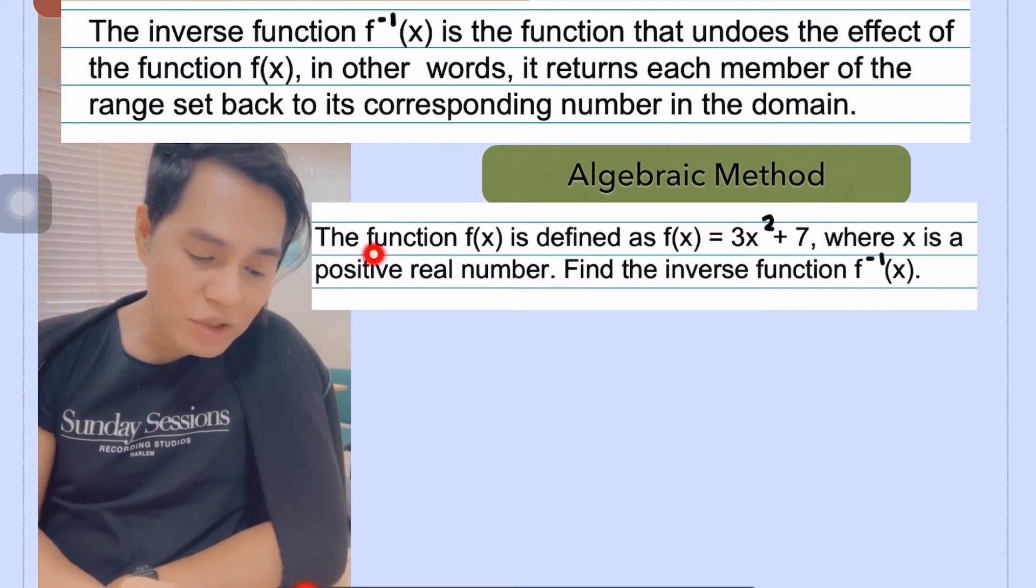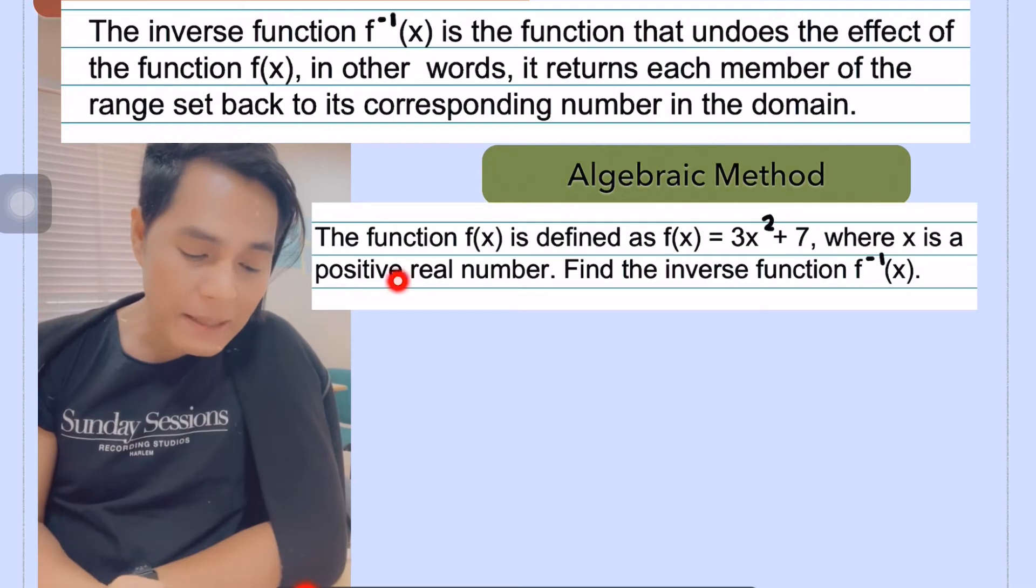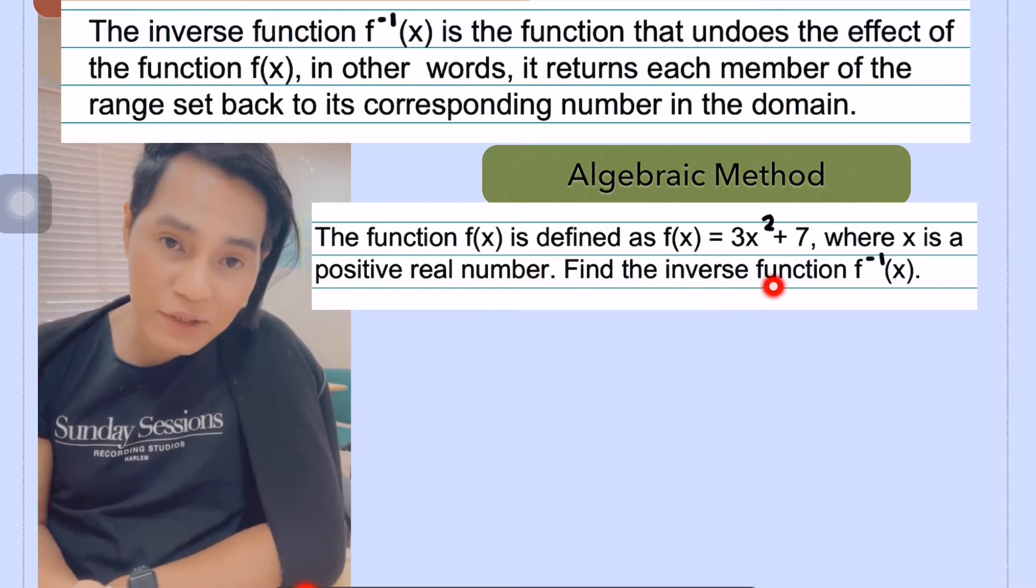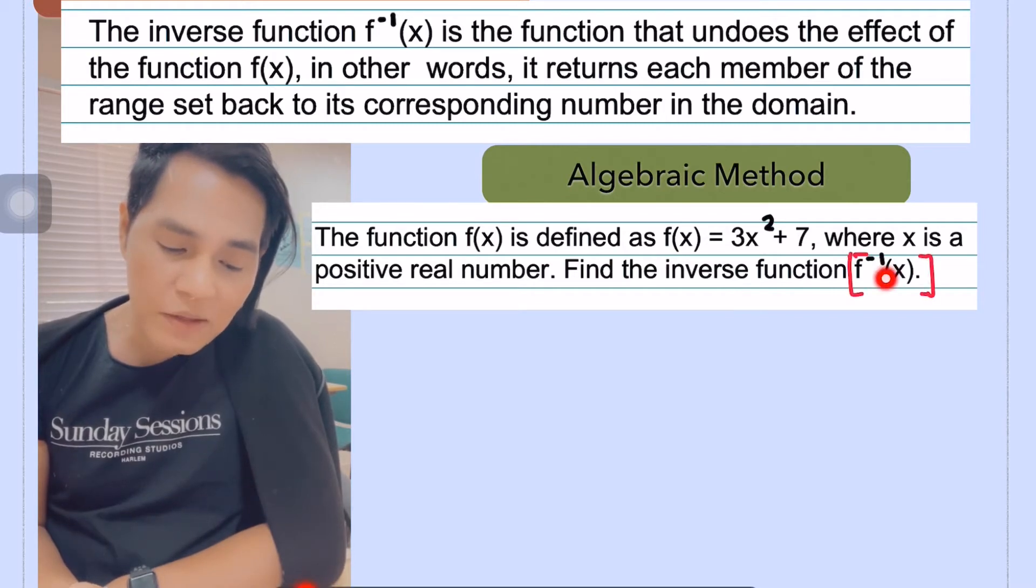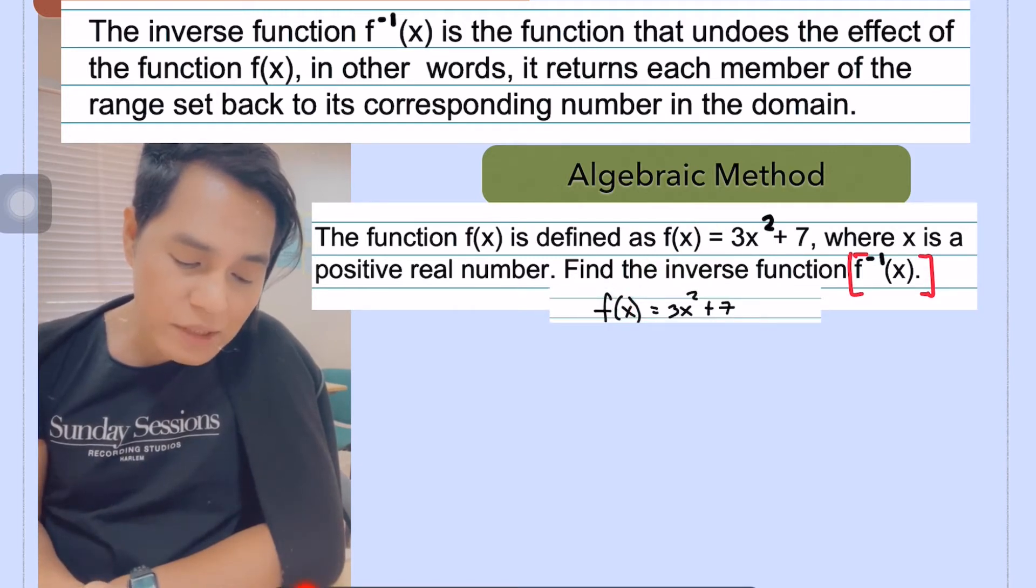The problem is the function f(x) is defined as f(x) equals 3x squared plus 7, where x is a positive real number. So we are asked here to find out the inverse function. We can represent this one as f to the power of negative 1 of x.